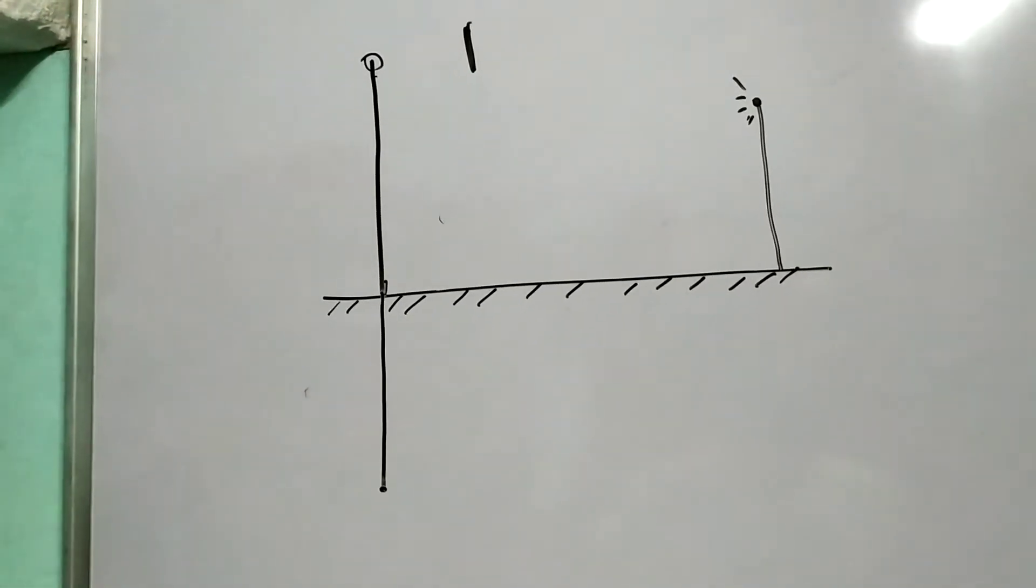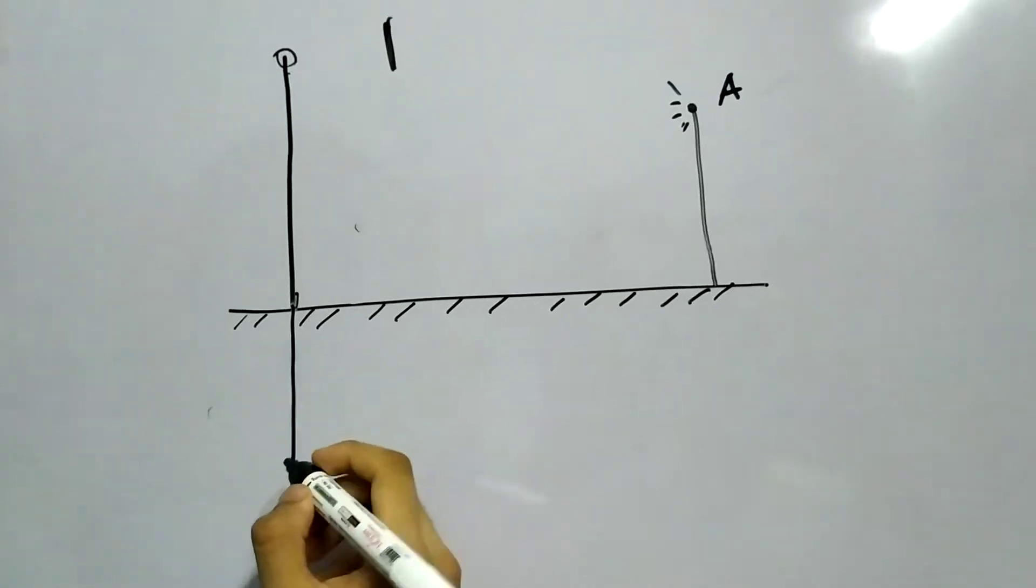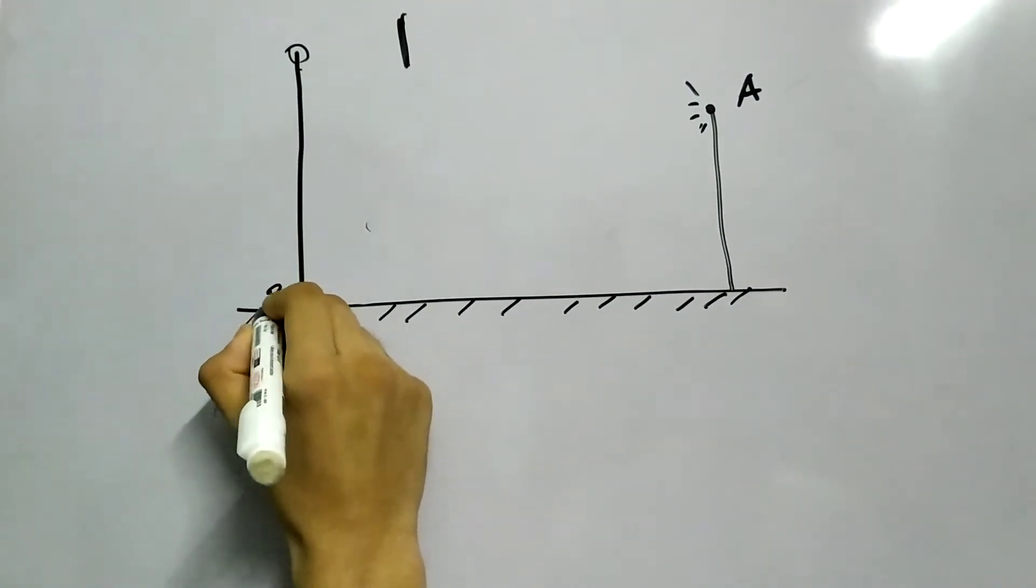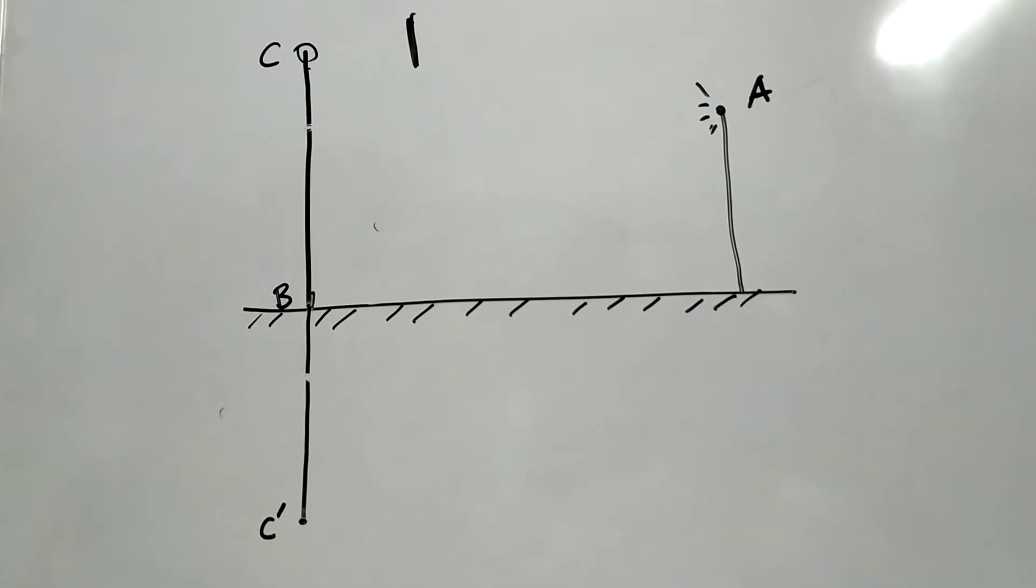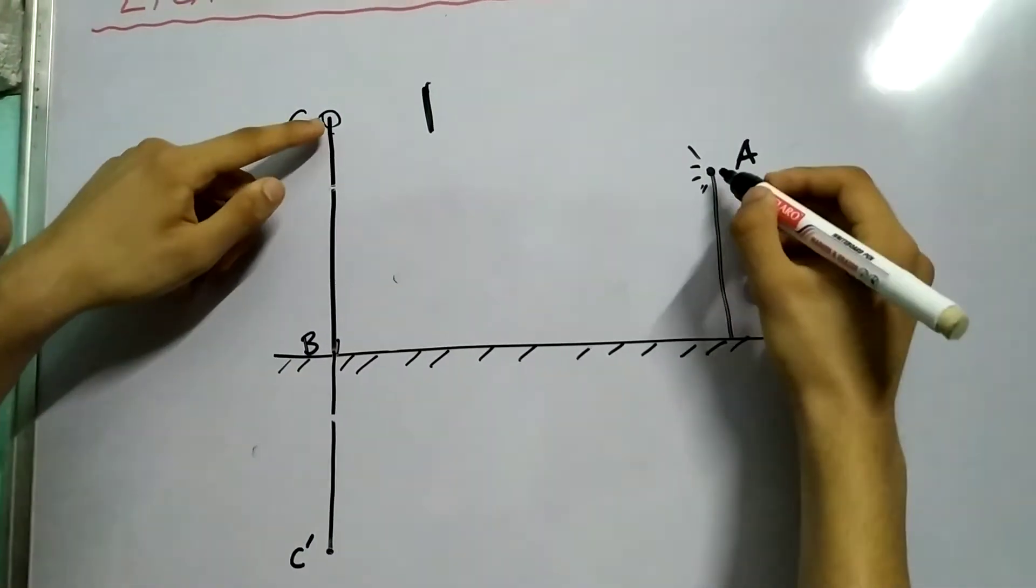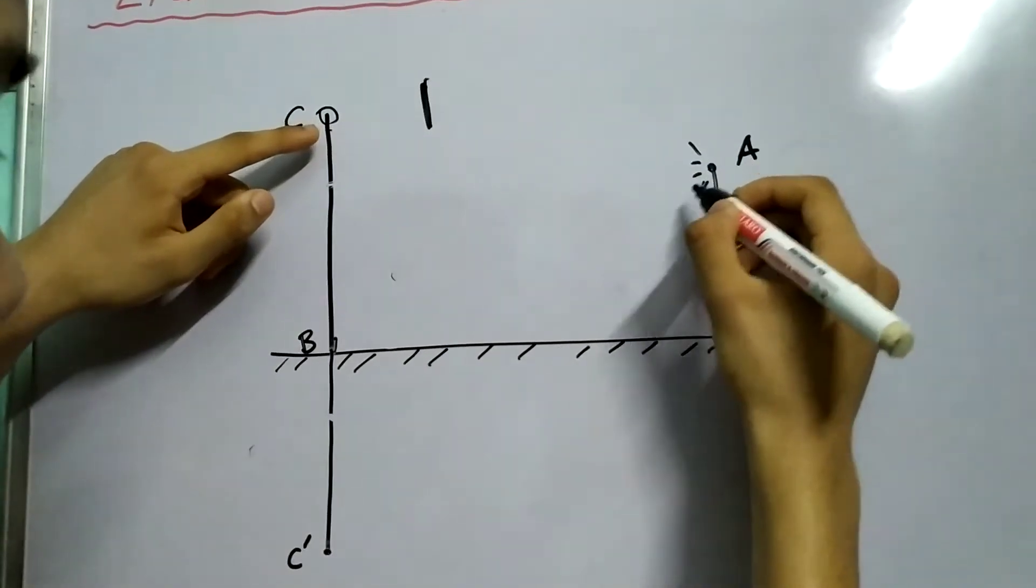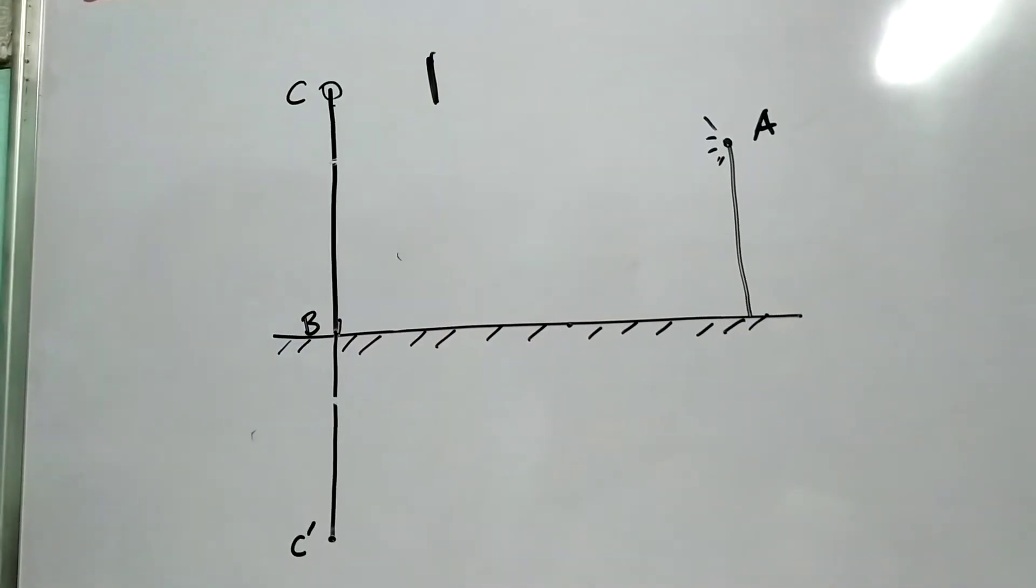And now, what will happen? Well, let's start labeling this. This is A. This point, let us say B. This is C and this is some C dash. And what path will light take? Of course, light will go from A and meet the mirror at some point and then go to C.